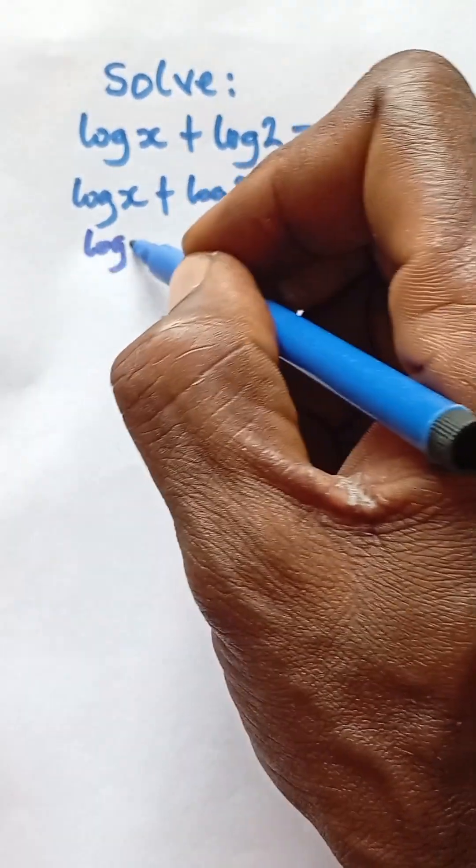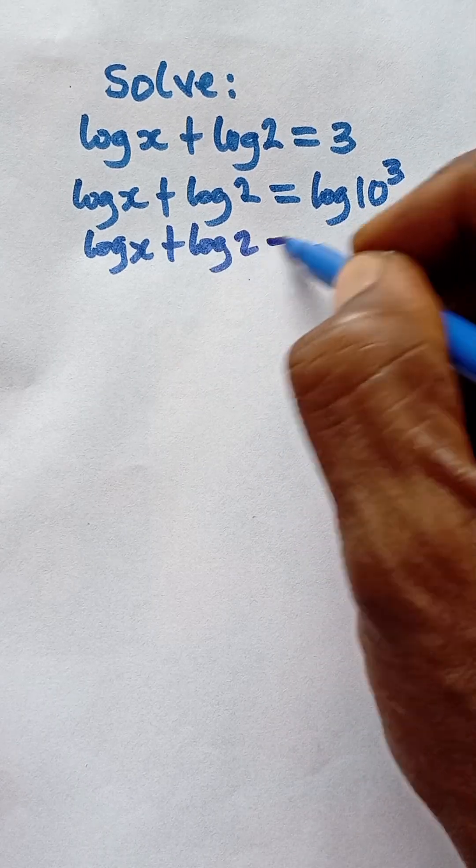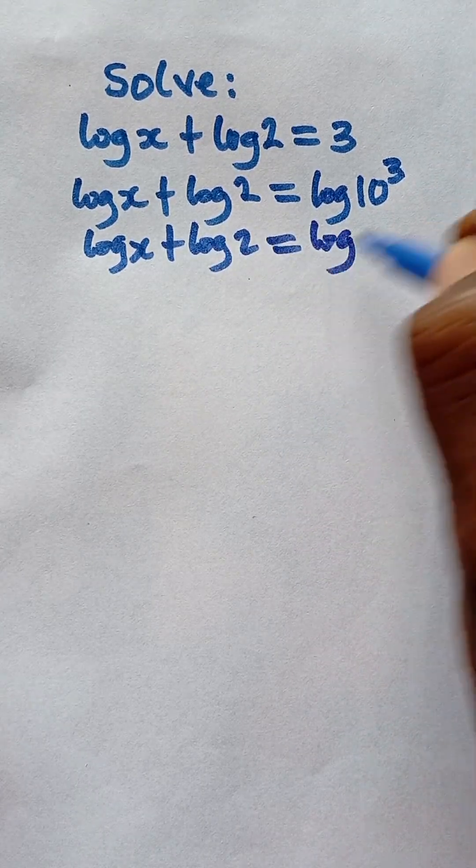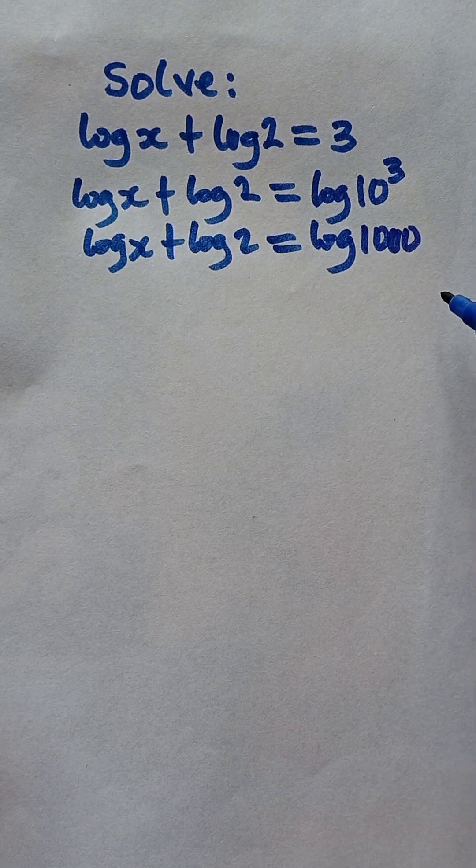So that gives us log x plus log 2 is equal to log 10 raised to power 3, which is 1000.